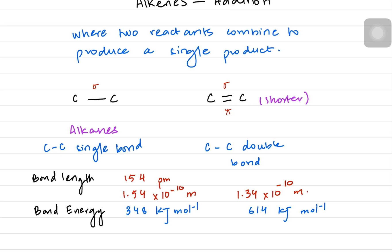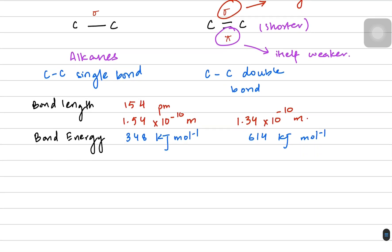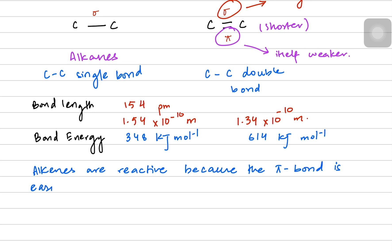But the pi bond itself is weaker. When we say alkenes are reactive, we are not saying we break both the sigma and the pi bond — the sigma bond is stronger and we're not breaking that. From these two bonds, the sigma and the pi, the pi bond is weaker and we can break it. So alkenes are reactive because the pi bond is easily broken.